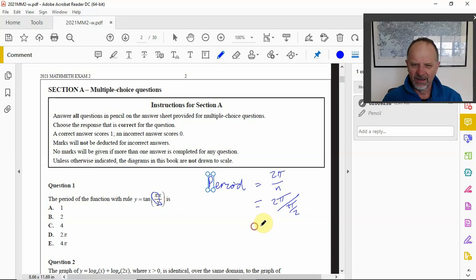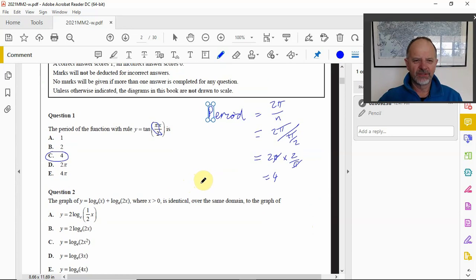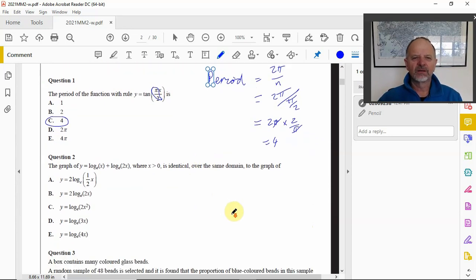We've got some π's canceling and so we've got a 4 for our period. The next one, question 2: the graph of log base e of x plus log base e of 2x.